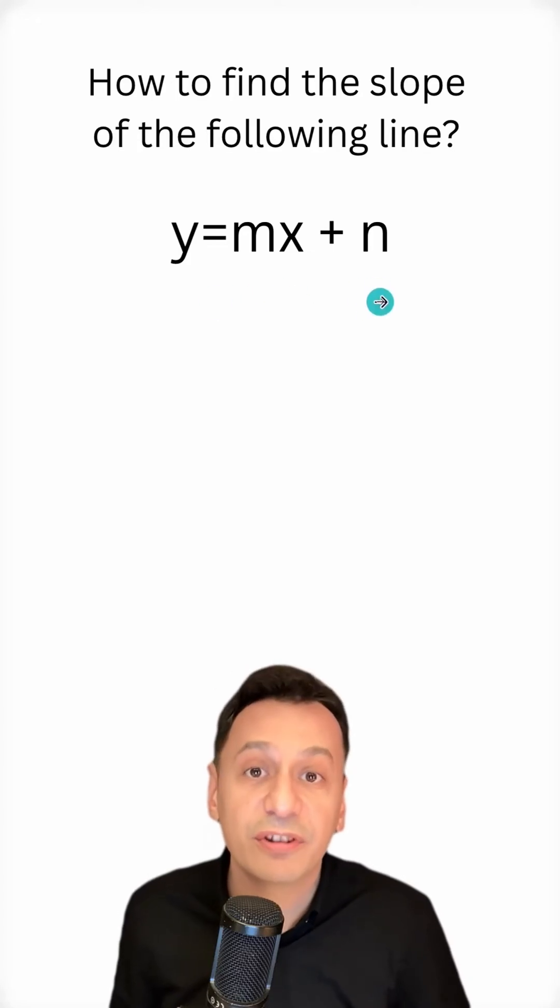Given that m and n are numbers different from 0, we are given the line y equals mx plus n and we are asked for the slope of this line.